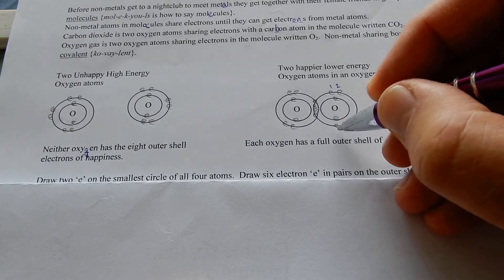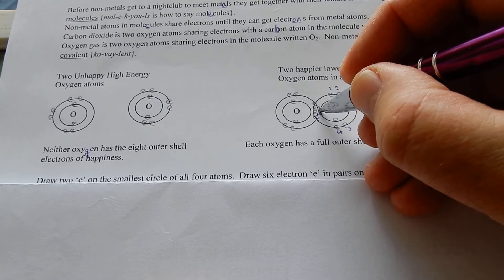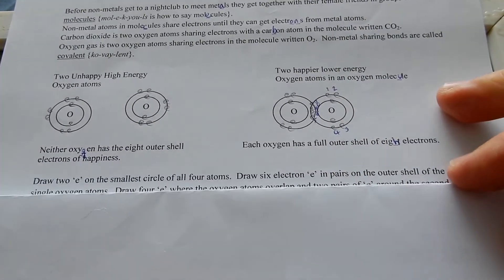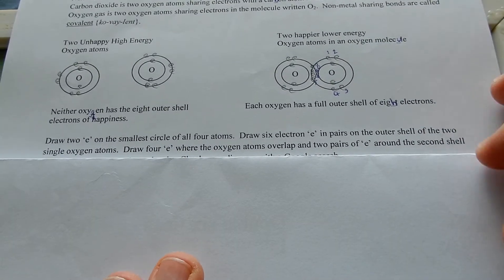1, 2, 3, 4, 5, 6, 7, 8, 4. It's a double bond so there's four electrons being shared.